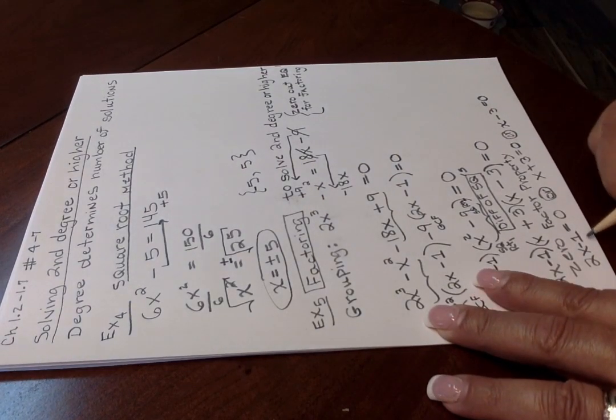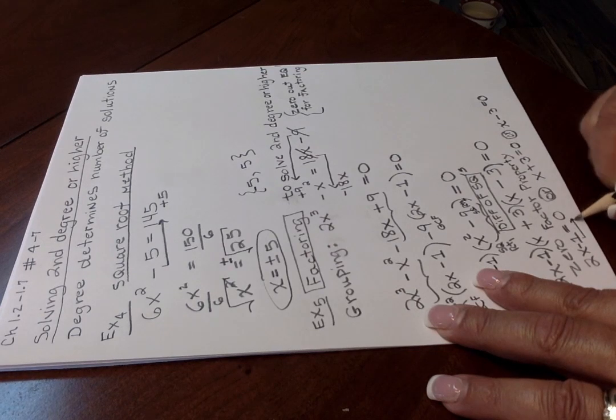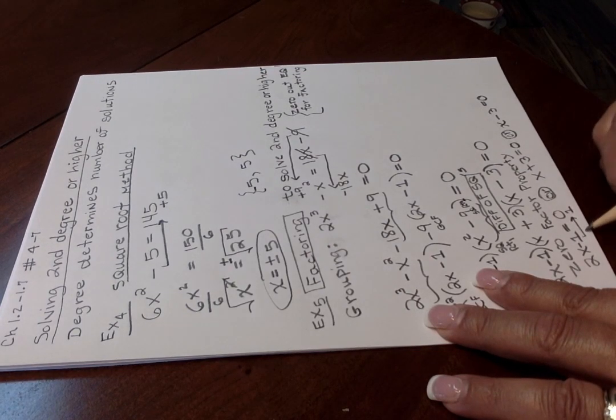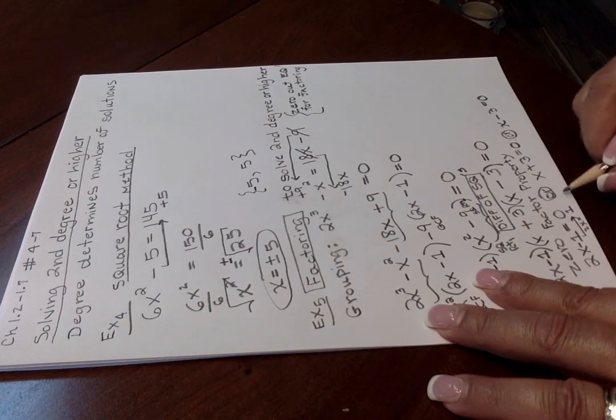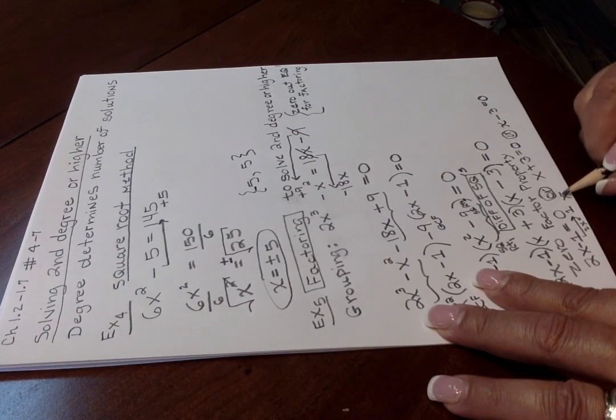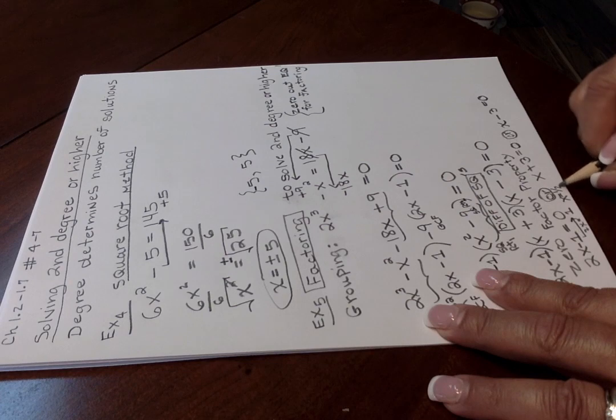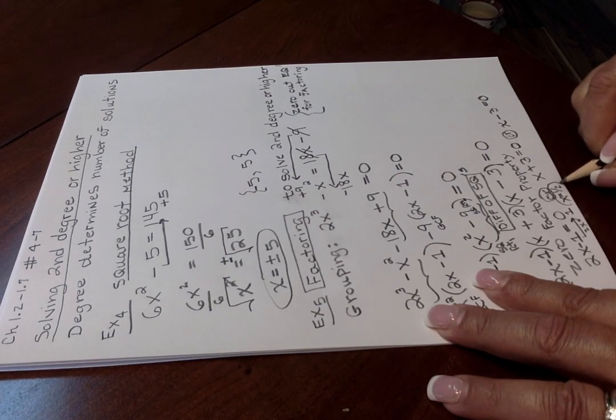If you were to solve this one, you would move the one over here. So you'd have 2x equal to 1. You would divide both sides by 2, giving you x equal to one half. Sorry about that. I ran out of room for that solution.